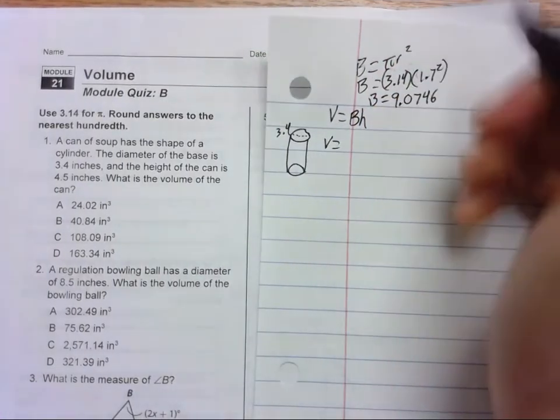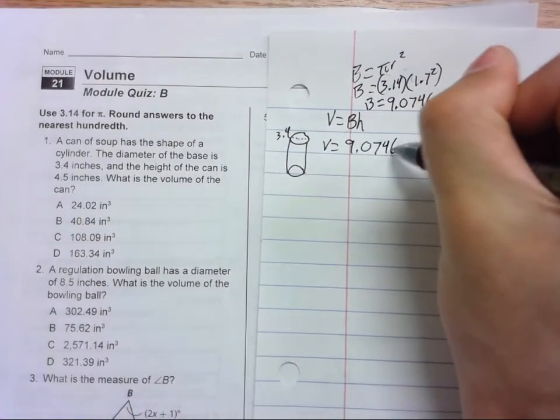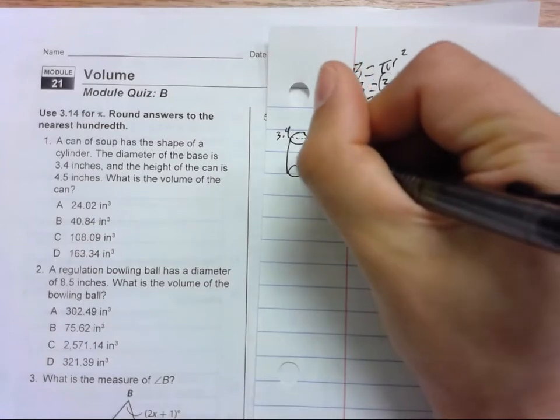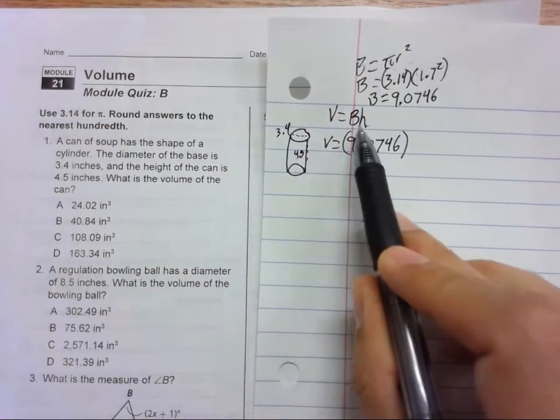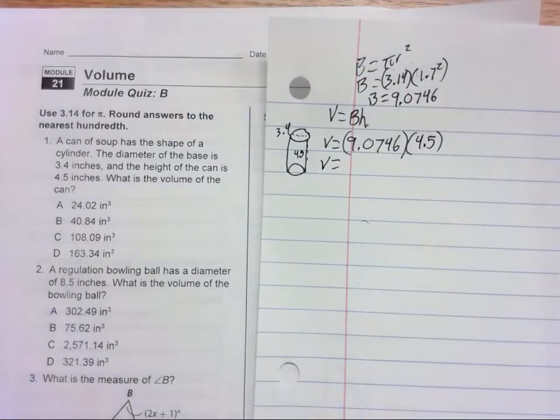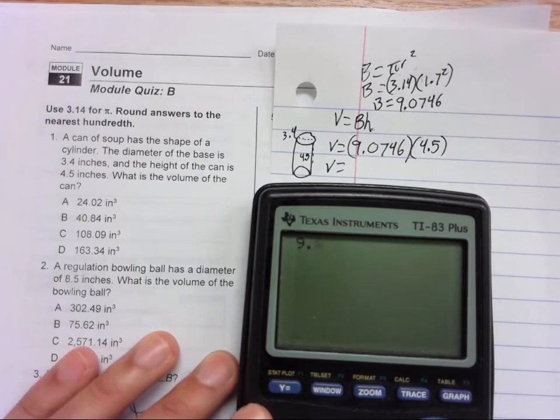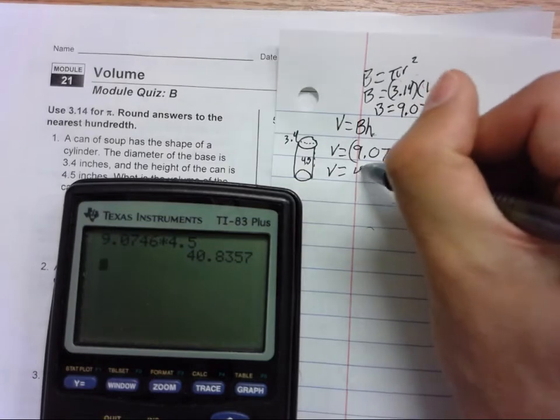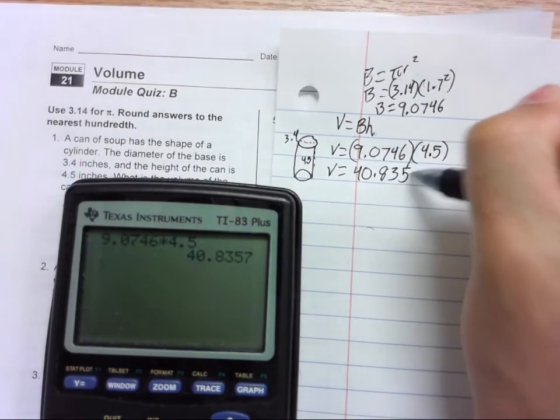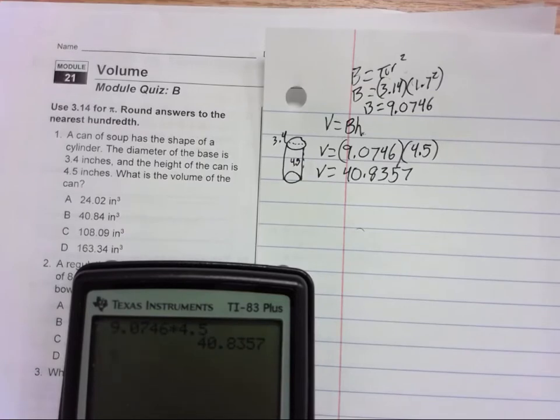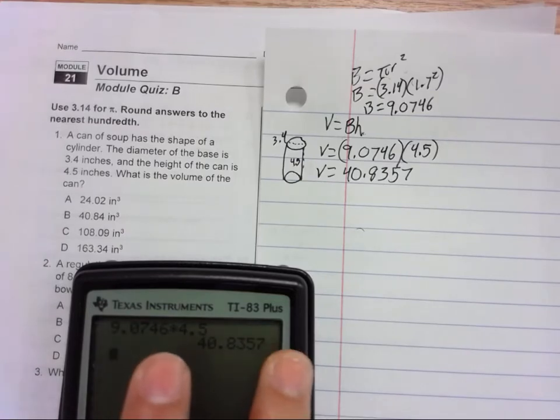We plug that in for the area of the base. So volume equals 9.0746 times the height of the prism. Well, the height of the can is 4.5, so the height is 4.5. That's the height of the prism, the height of the can, 4.5. So the volume is 9.0746 times 4.5, we get 40.8357.